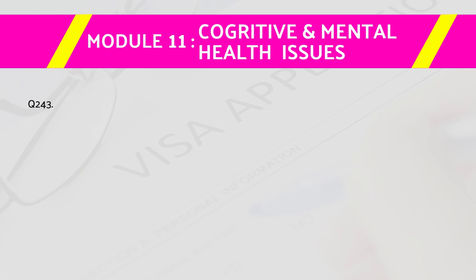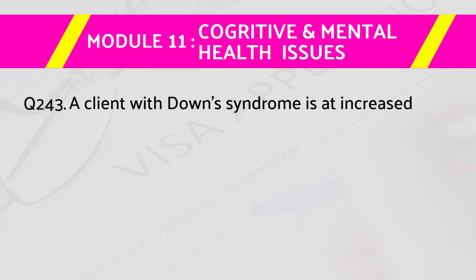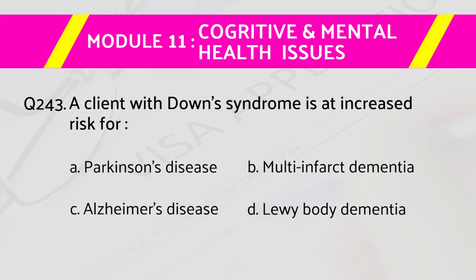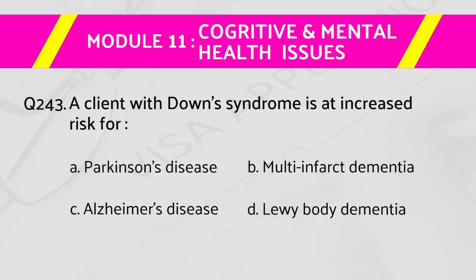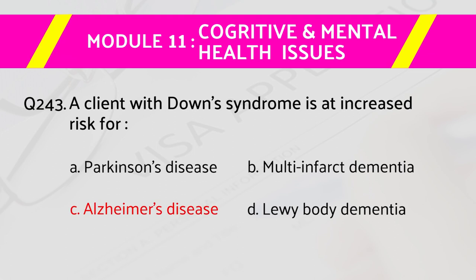Question number 243: A client with Down syndrome is at increased risk for — answers are: a) Parkinson's disease, b) multi-infarct dementia, c) Alzheimer's disease, d) Lewy body dementia. The right answer is c) Alzheimer's disease.